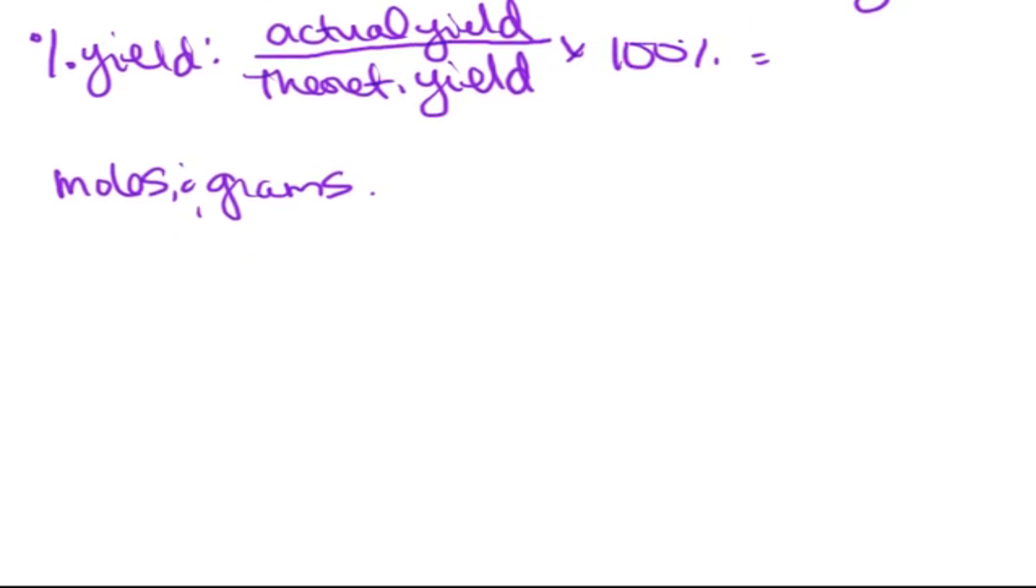So let's get our actual and theoretical yields in moles and grams. So our actual yield, we were told that we precipitated 1.3 grams, and earlier we found that we had 0.020 moles of our theoretical. So let's find how many moles of our actual yield there are.